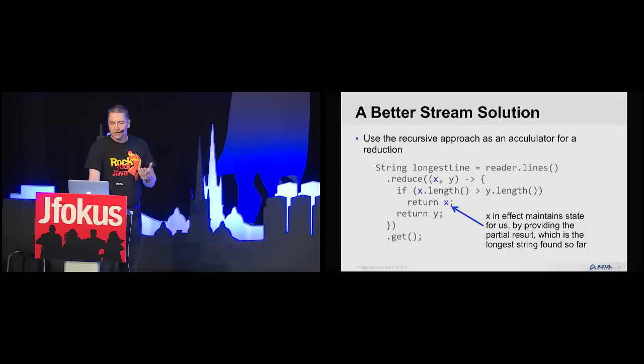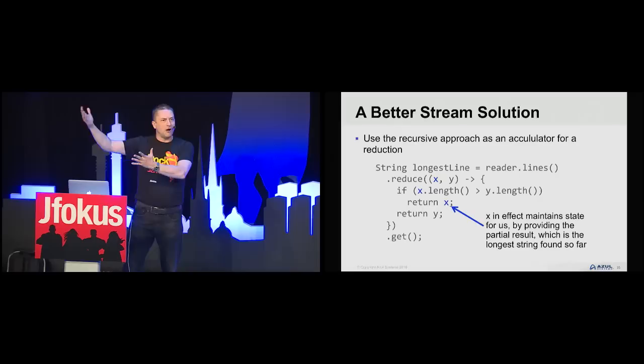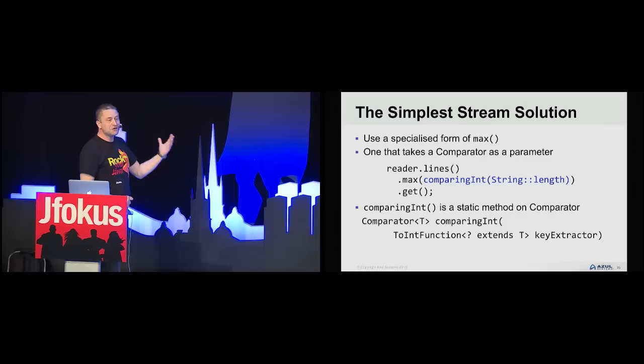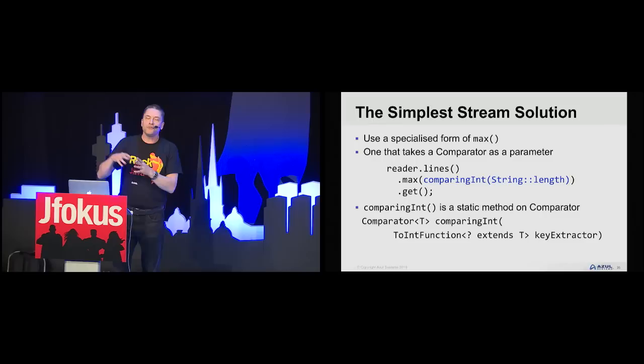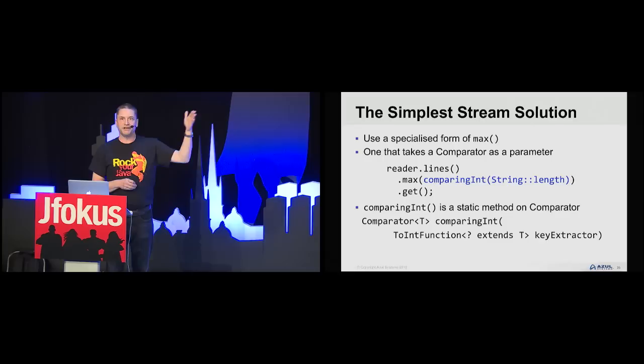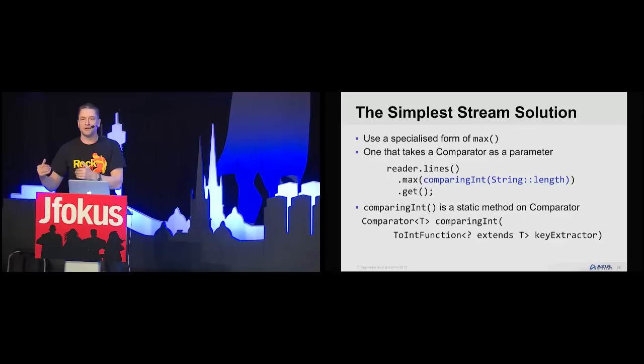I showed this to Stuart Marks, who said: yeah, that's really nice, except there's a much easier way. You can simply use max with a comparator as a parameter rather than max on a stream of ints. So: reader.lines(), pass to max, and compare each element based on length. That gives you the longest element comparing by length. It's an interesting approach in terms of understanding how functional programming works and then looking at the documentation.